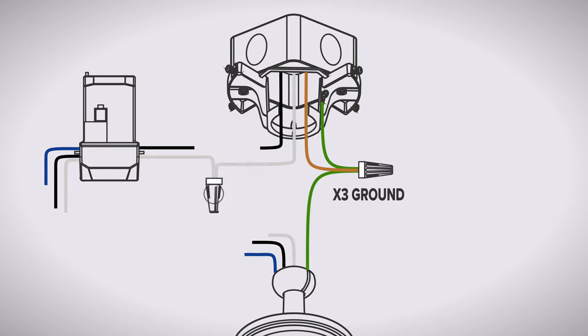Connect the neutral wire from the ceiling box to the white wire from the receiver labeled ACNN. Connect the hot wire from the ceiling box to the black wire from the receiver labeled ACNL.